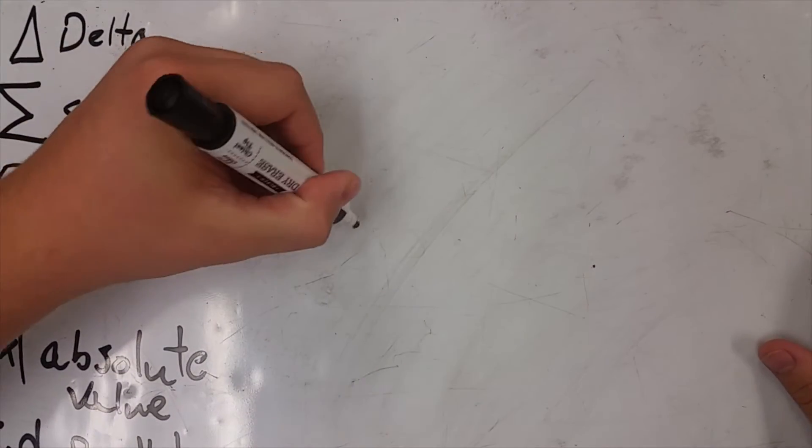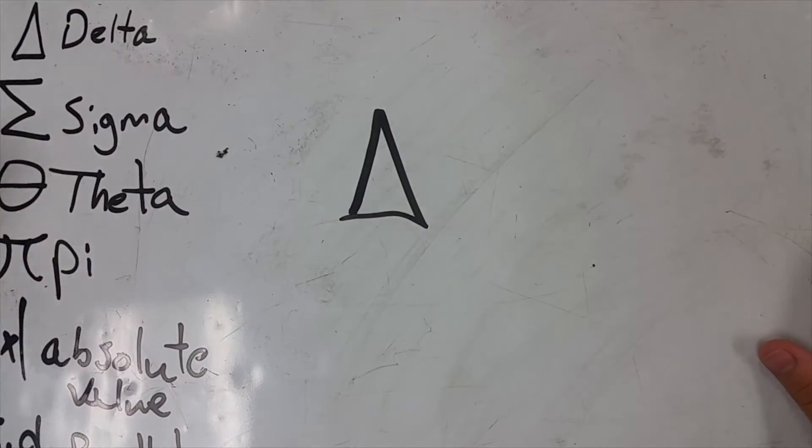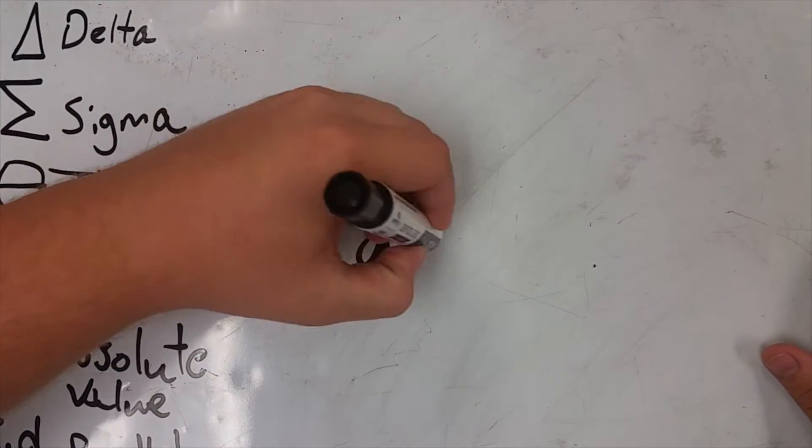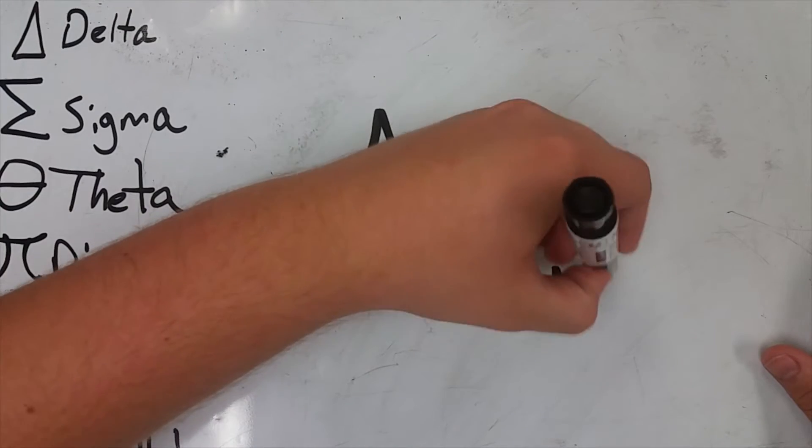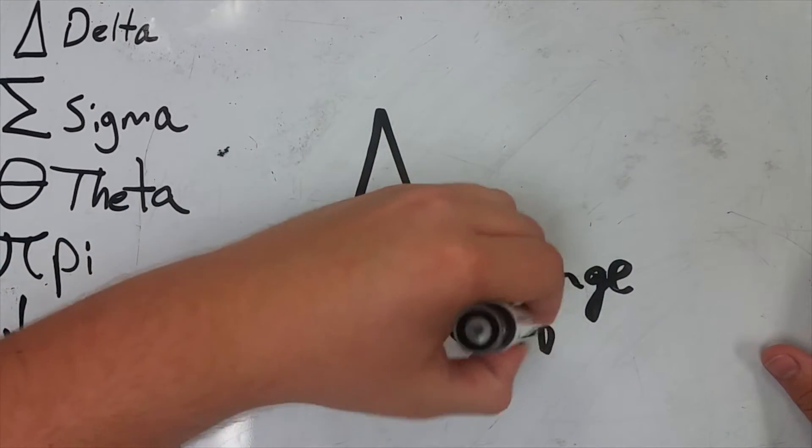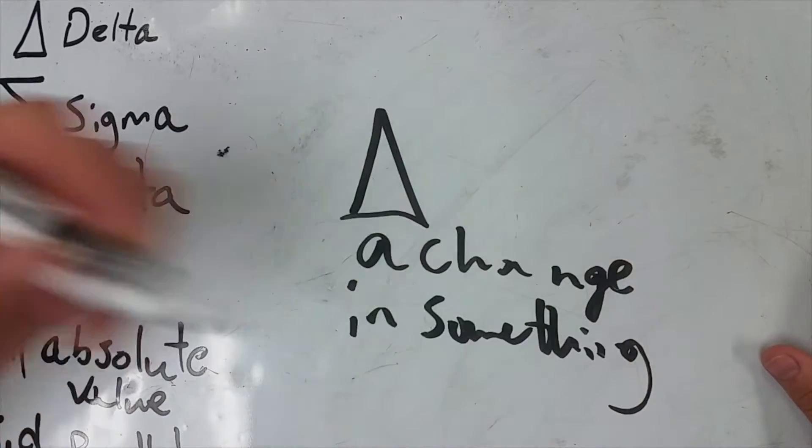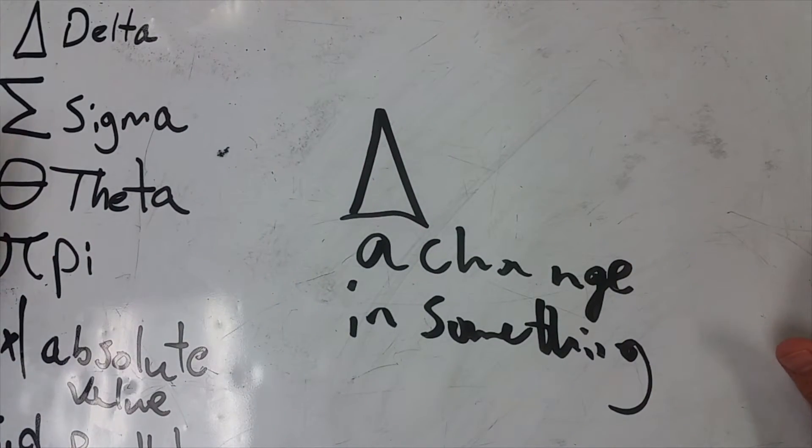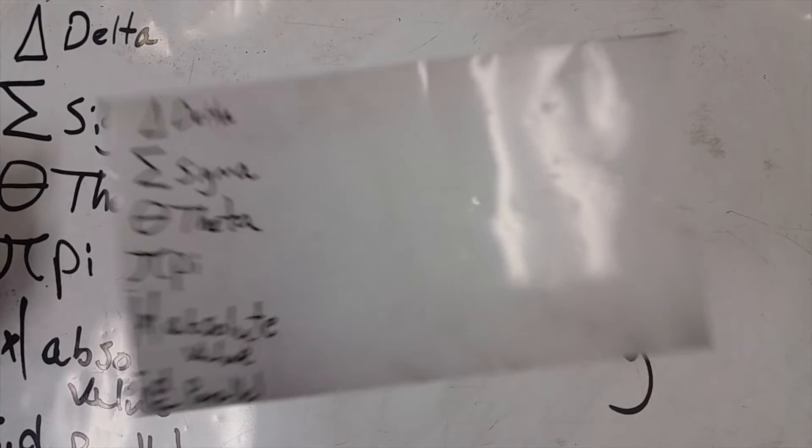The first word we're going to go over is Delta. Delta stands for a change in something, generally a measurement and things like that. You see Delta in a lot of things throughout physics.